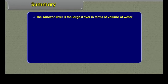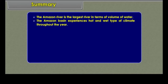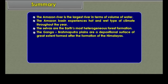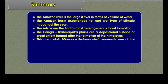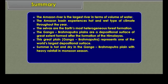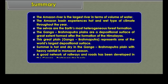The Amazon River is the largest river in terms of volume of water. The Amazon Basin experiences hot and wet type of climate throughout the year. The Selvas are the earth's most heterogeneous forest formation. The Ganga-Brahmaputra plains are a depositional surface of great extent, formed after the formation of the Himalayas, representing one of the world's largest depositional surfaces. Summer is hot and dry in the Ganga-Brahmaputra plain with heavy rainfall in the monsoon season. A good network of railways and roads has been developed in the Ganga-Brahmaputra basin.